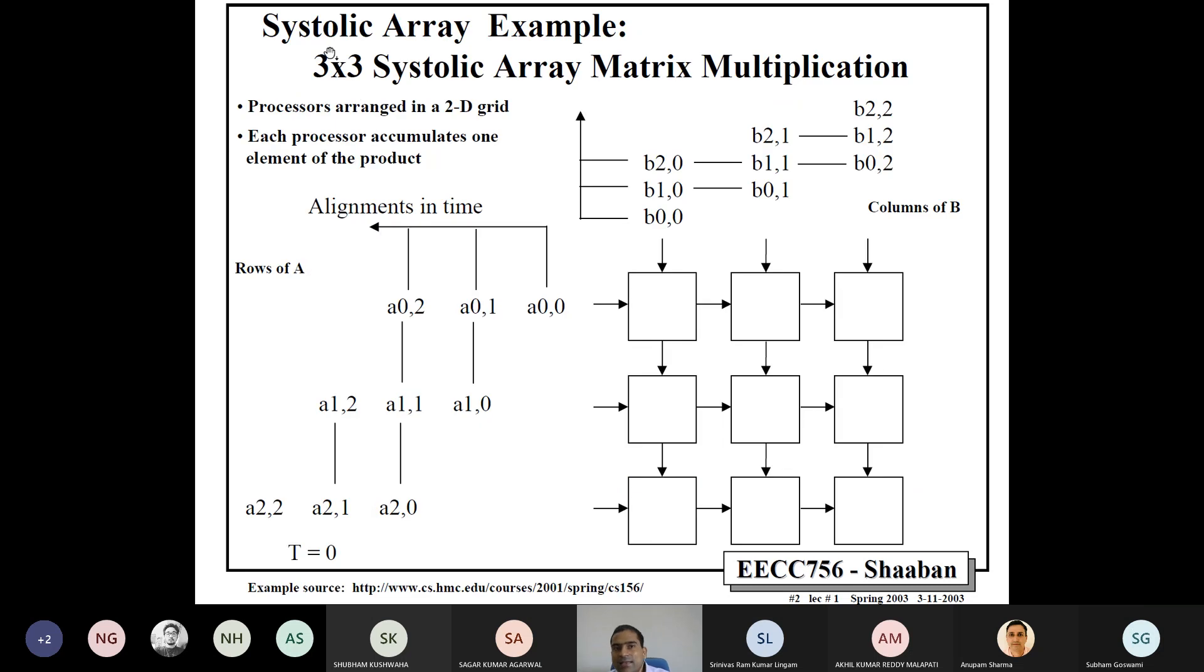So, now let us see this. We will see the use of systolic array for performing matrix multiplication. So, we have a 3 x 3 systolic array, here you can see each of these squares is actually a processing element. That means it can do a MAC operation, multiply accumulate operation. And these are our input matrices, A and B, which are both 3 x 3 matrices.